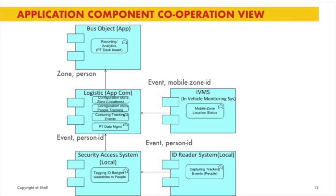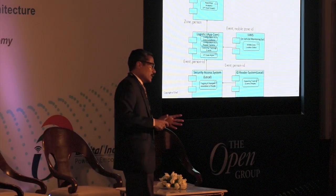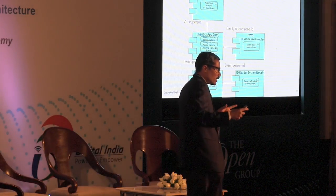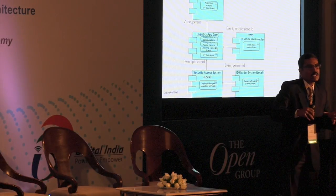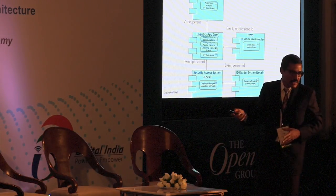This is another important view for the integration architect. All application components are modeled here, with key functionalities nested within each component. This diagram shows how application components use and support each other, and how together they orchestrate to deliver the complete solution capability.